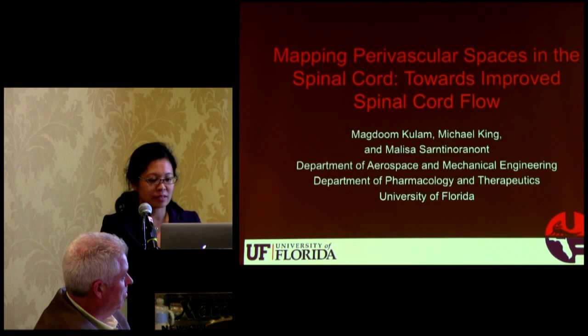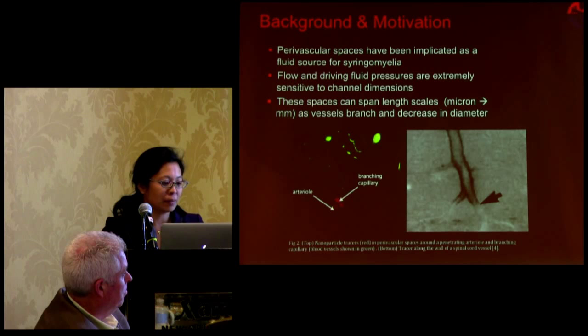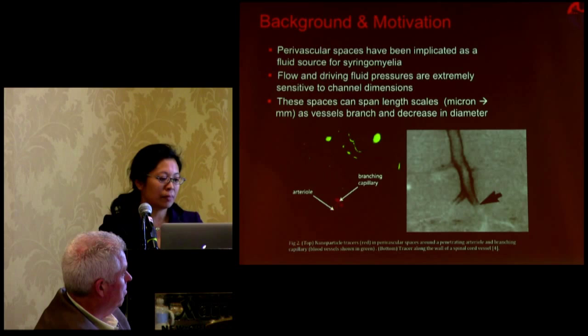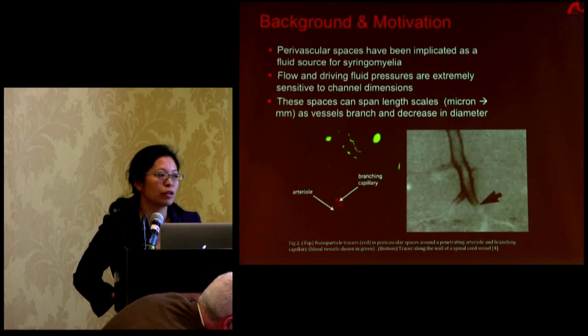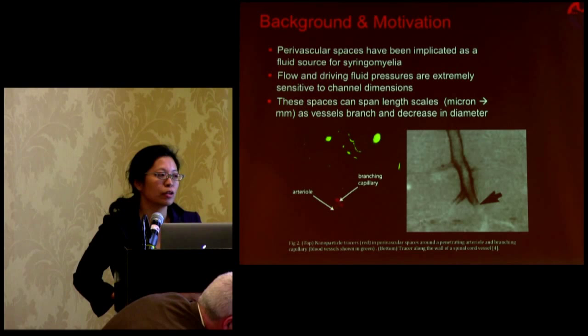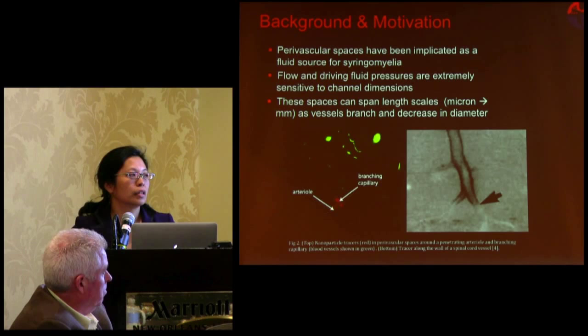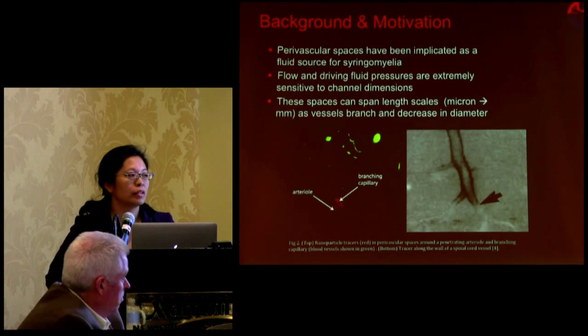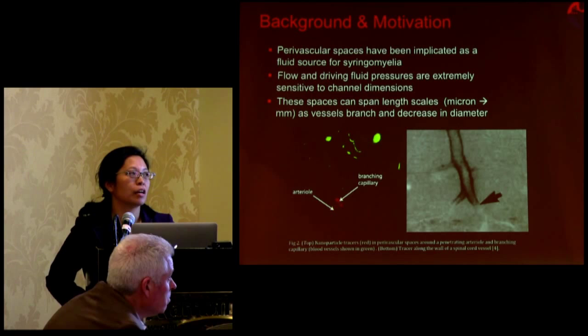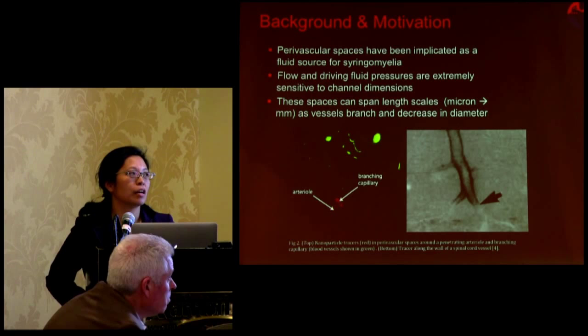In terms of background, as you're probably well aware, paravascular spaces have been implicated as a fluid source for syringomyelia. And just in terms of flow and flow dynamics, fluid flows are extremely sensitive to dimensions — like to the fourth power. So the idea that the diameter or thickness of the paravascular spaces can greatly influence the pressures required to drive flow, the timing, pulse waves that go through the tissue space that might drive flows — all the dynamics, the time aspects and the pressure aspects, are going to be very dependent on the geometry of these spaces.